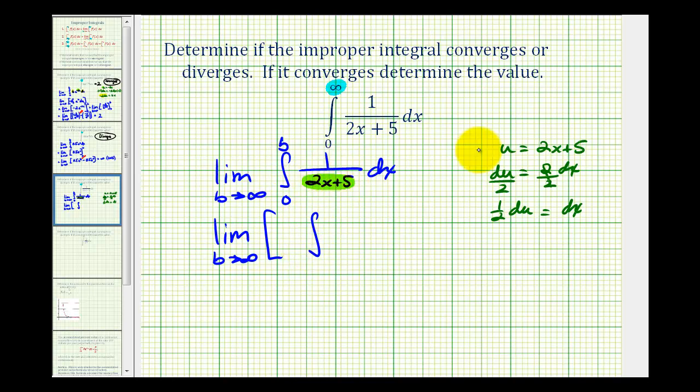So two x plus five is equal to u. So we'll have one over u and then dx is equal to one half du. So we'll pull out the one half and we have du here.